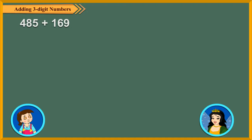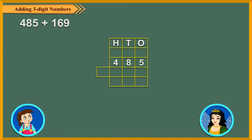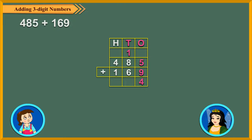Let us take another example: 485 plus 169. As usual, we arrange the numbers in columns. Now add the ones digits. 5 ones plus 9 ones is equal to 14 ones, which is equal to 1 ten and 4 ones. We write 4 in the ones column and carry over 1 to the tens column. Then add the tens digits. 1 ten carried over plus 8 tens plus 6 tens is equal to 15 tens, which is equal to 1 hundred and 5 tens.